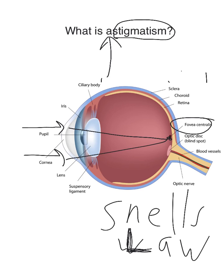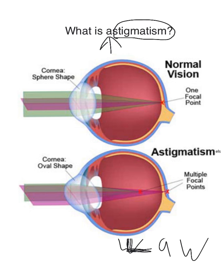In astigmatism, what happens is that there are two points — there are two points of light. I have a picture of a normal eye and an eye with astigmatism. As you can see, an eye with astigmatism has multiple focal points, while a normal eye just has one.